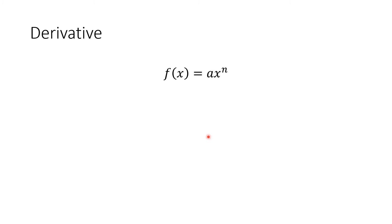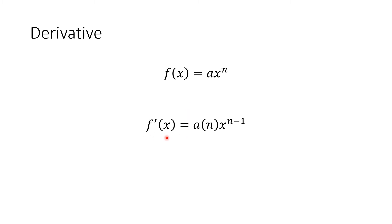In the case where f(x) = ax raised to n, where a is any real number coefficient and n is the exponent — any real number except 1 — the derivative is f prime of x = a times n, times x raised to n minus 1. The exponent is multiplied to the coefficient, and x is now raised to n minus 1.